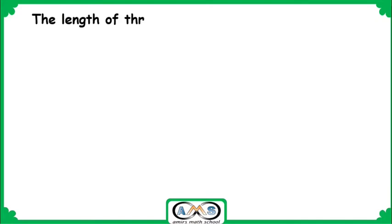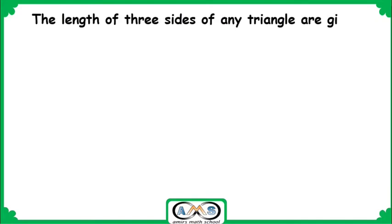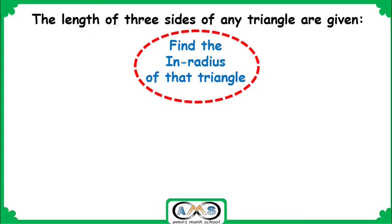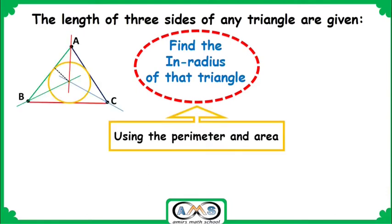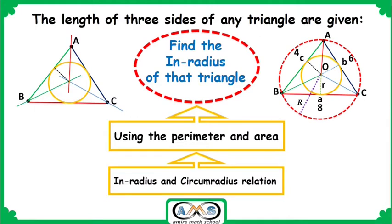Welcome to Amir's Math School. In this video we are going to discuss a very interesting topic: the length of three sides of any given triangle. We are going to find the in-radius of that triangle and find this in-radius using the perimeter and the area formula — relating the area with in-radius — and finally find the relation between in-radius and circum-radius of any triangle.